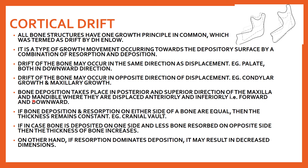Bone deposition takes place in the posterior and superior direction of the maxilla and mandible, where they are displaced anteriorly and inferiorly. If bone deposition and resorption on either side of the bone are equal, the thickness remains constant. If more bone is deposited and less is resorbed, thickness increases. If resorption is more and deposition is less, there is a decrease in dimensions. This is cortical drift.